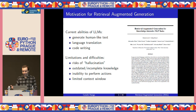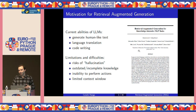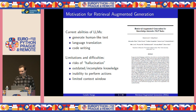Now these are inherent issues which cannot be solved by just increasing the size of the model with more parameters or scaling the computation power with more GPUs. Instead, there is a technique that was developed a few years ago by researchers at Meta which addresses these challenges. It's called Retrieval Augmented Generation, or RAG for short.